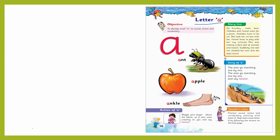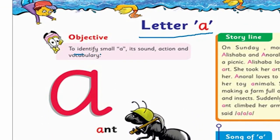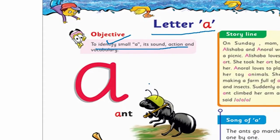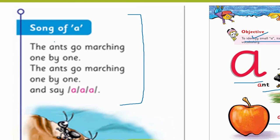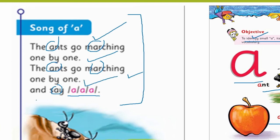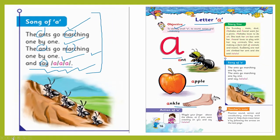Letter A. मुझे उम्मीद है कि अब आपको इस letter 'a' की पहचान हो गई है, क्योंकि हमारा SLO कह रहा था कि आपको उसकी identification हो जाए: a — ant, a — apple, a — ankle. यह song of 'a' हमने sing किया था — इसमें भी 'a' मौजूद है: ants में, marching में, say में। The ants go marching one by one, the ants go marching one by one and say a, a, a. यह song आपकी बुक में यहाँ पर मौजूद है — इसको आप बार-बार sing करके practice कर सकते हैं।